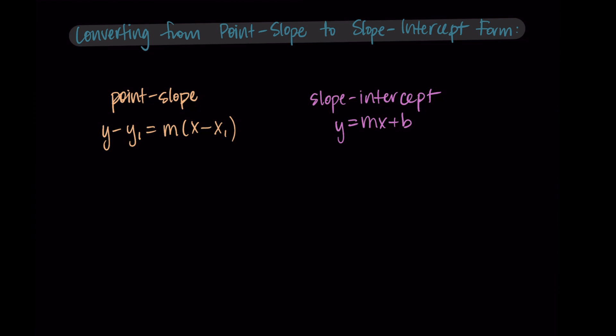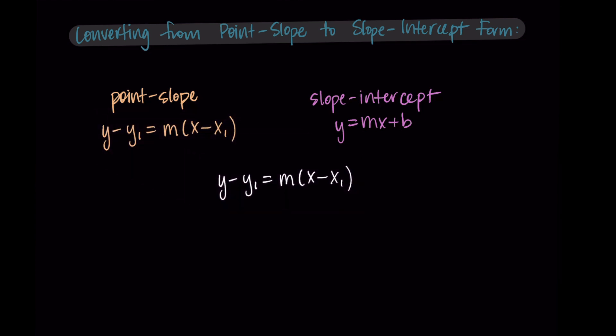I'm going to walk us through the algebraic steps we take each time to do this conversion, and then we'll practice it on some examples. Starting with point-slope form, we have y minus y1 is equal to m times x minus x1, and we want to get this to look like y equals mx plus b. In the final form, y is on the left-hand side by itself and there are no parentheses — everything has been multiplied out. So first, I'm going to multiply the slope m into the factor x minus x1, giving us m times x and m times x1.